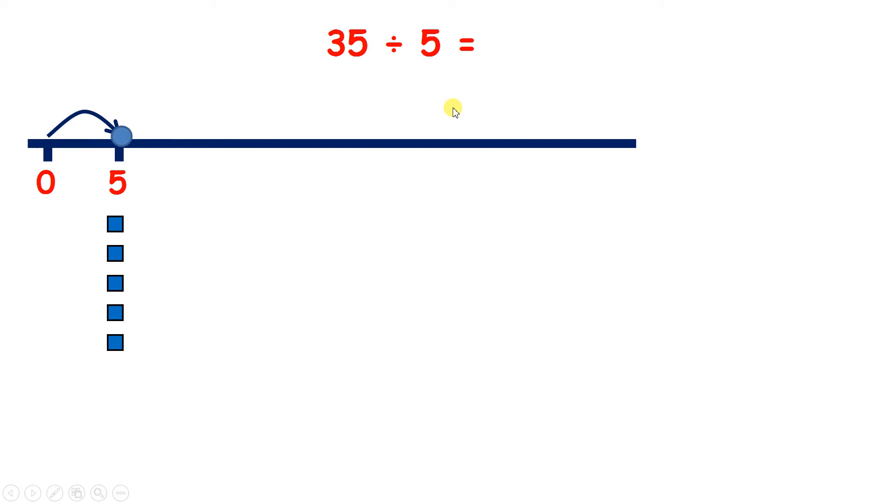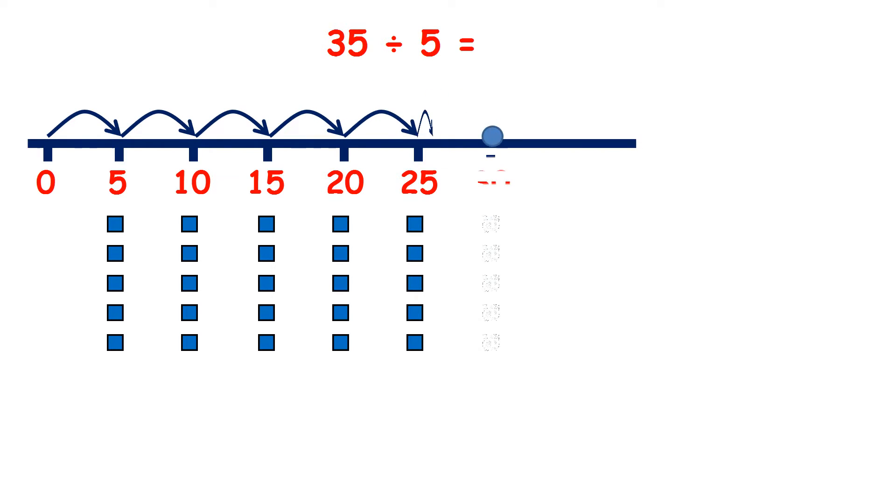So 5, 10, 15, 20, 25, 30, 35. So we've made 1, 2, 3, 4, 5, 6, 7 jumps. We've got 7 groups of 5. So 35 divided by 5 is 7.